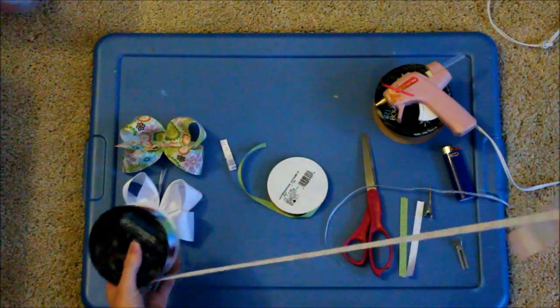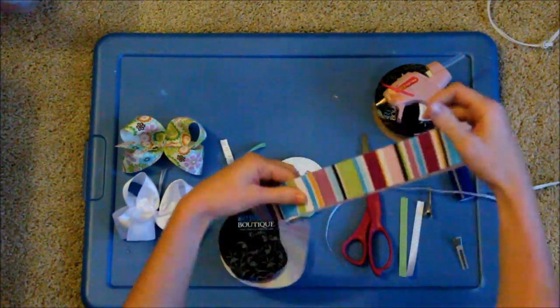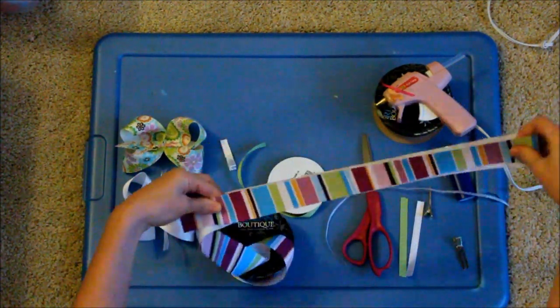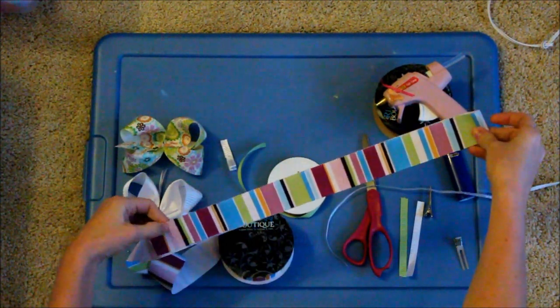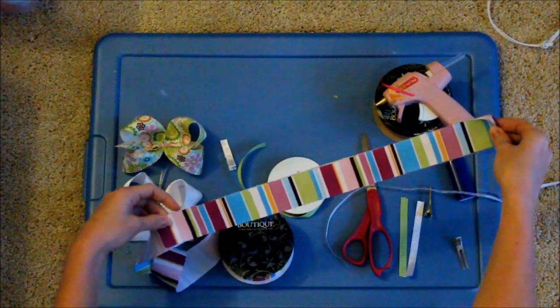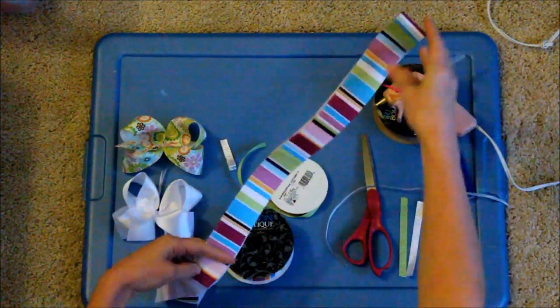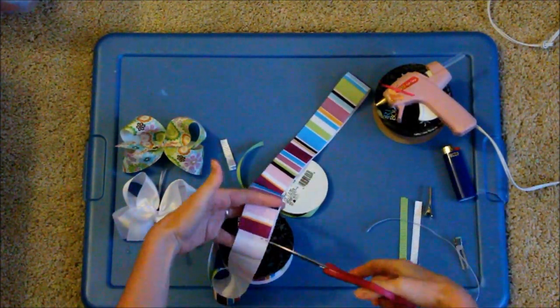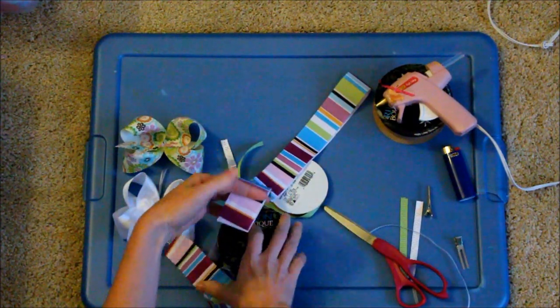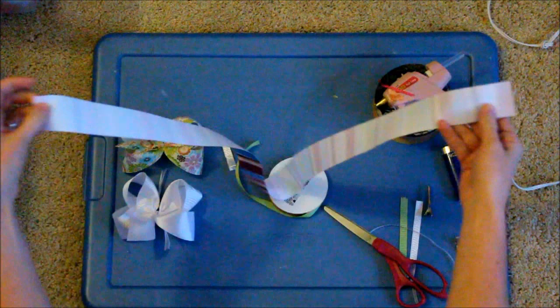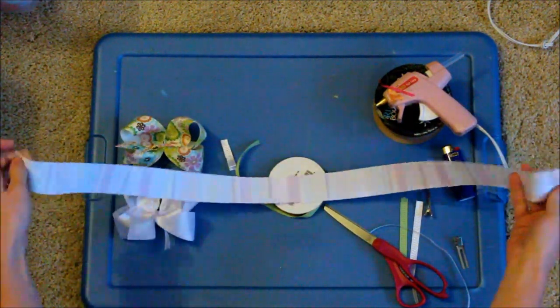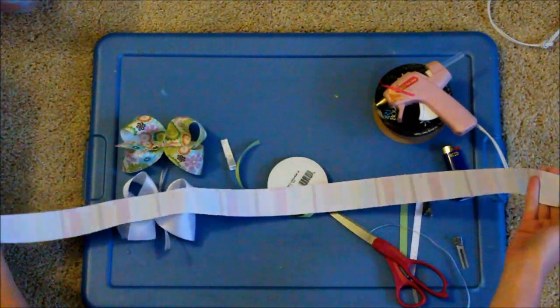Now, first thing we are going to do is measure how long we want our ribbon to be. And if you need to measure yours, I would say measure about 30 to 32 inches. But I like to just eyeball it so this is how big we are going to make ours. Now, you have your ribbon laying out. And if it's a patterned ribbon, have the pattern on the outside.